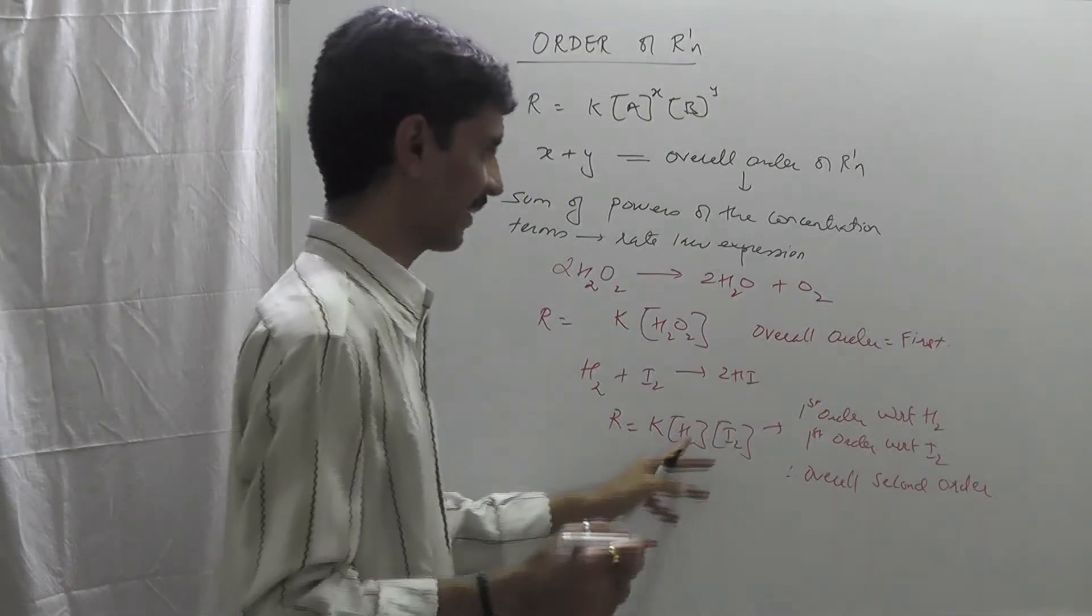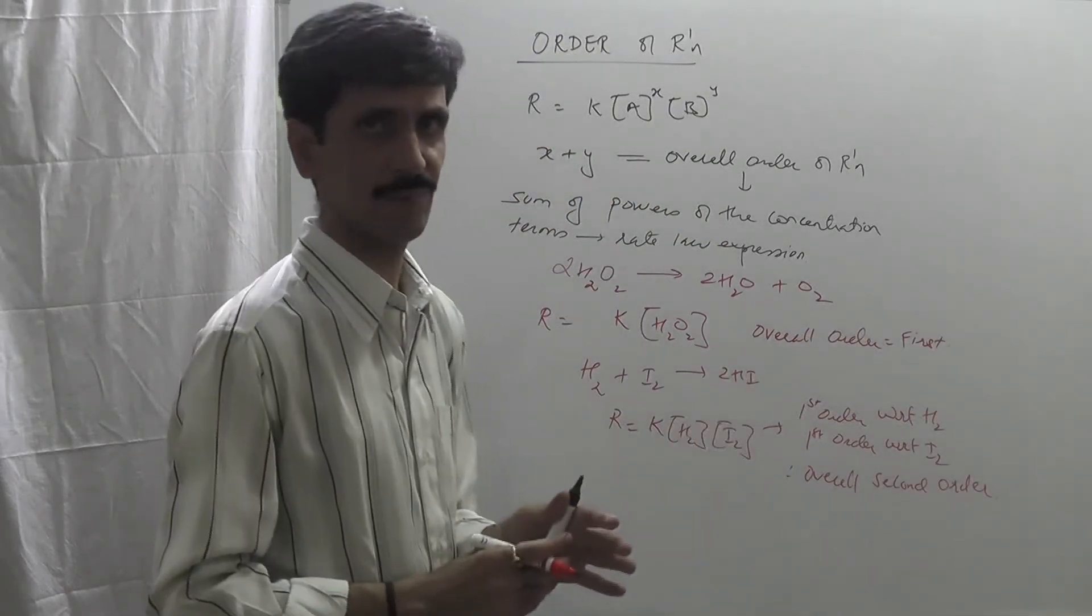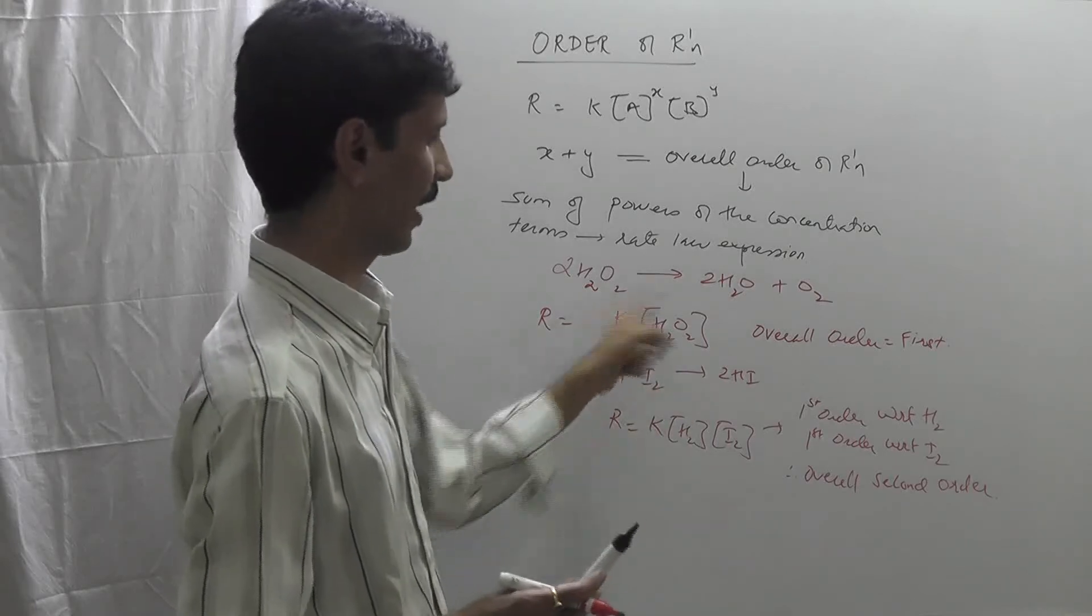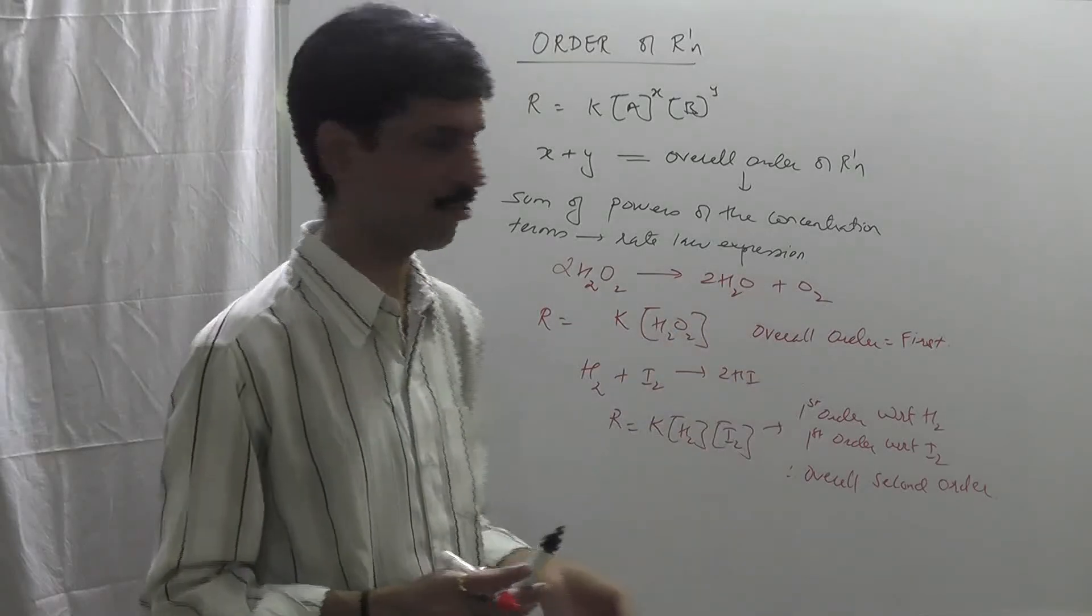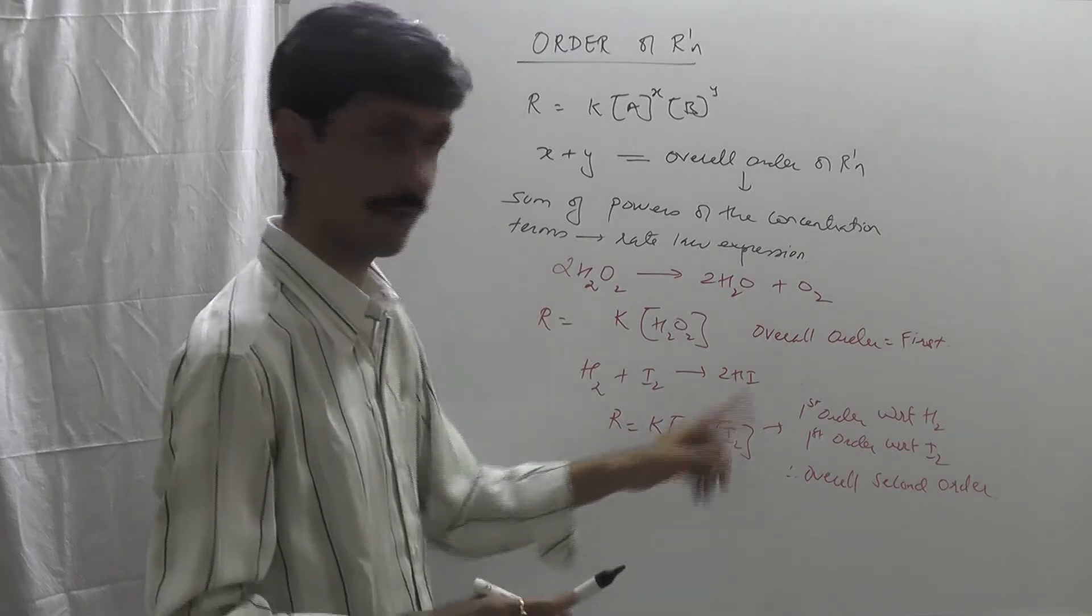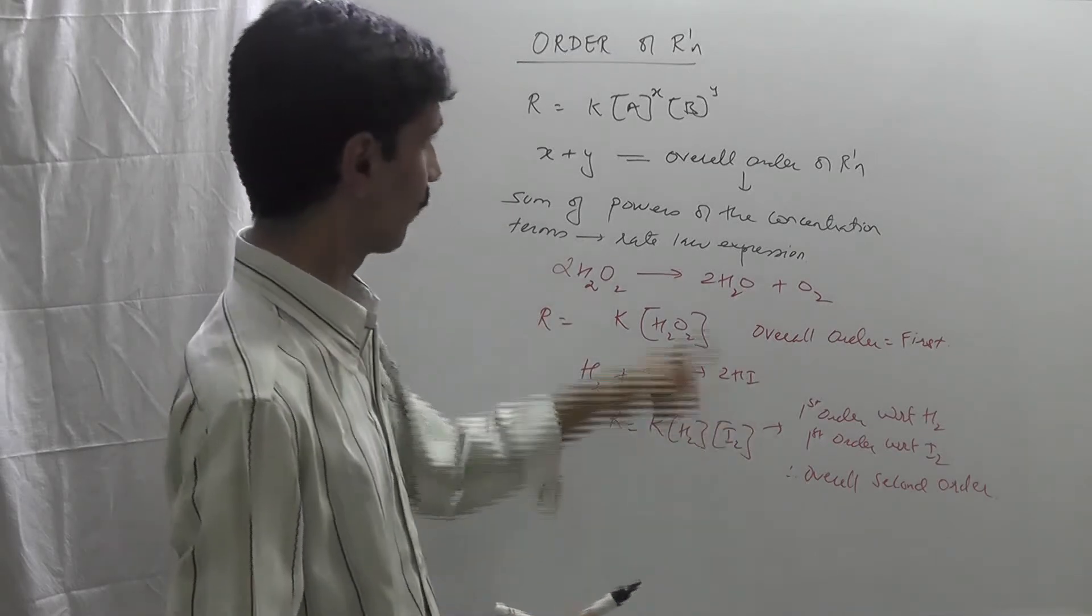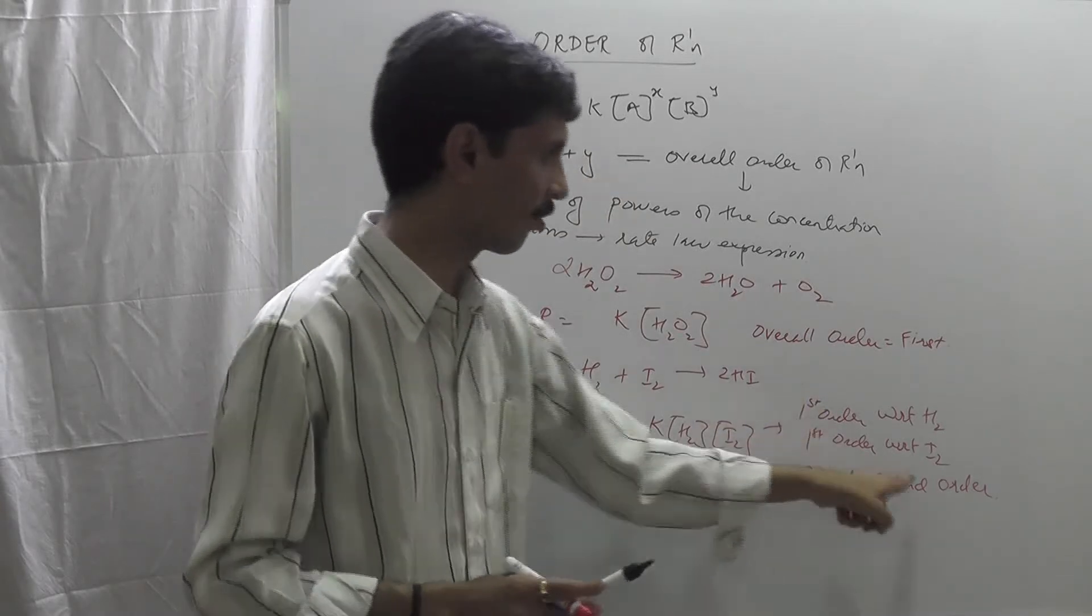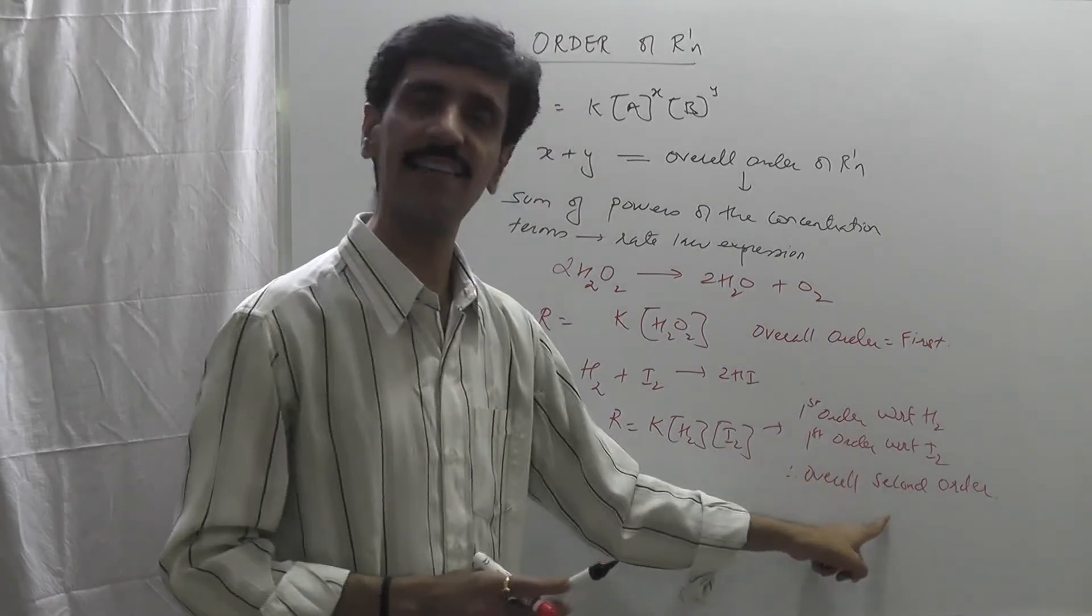Individual reactants can have their own order defined if they are involved in the rate law expression. Here there is only one, so that means directly we say it is first order. But here with respect to H2, first order; with respect to I2, it is first order. So overall, as I told you, it is nothing but X plus Y. So 1 plus 1 gives you 2, so it is a second order reaction.